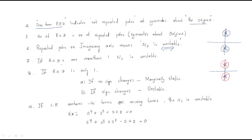Point seven: if there are more than one row of zeros, the system is unstable. If we have two ROZs in the RH table, the system is directly unstable. Conversely, if ROZ occurs only once with no sign changes, the system is marginally stable — this happens whenever poles are on the imaginary axis but not repeated.